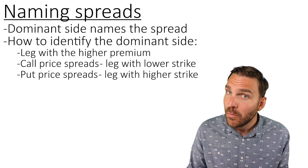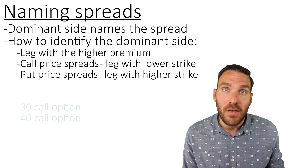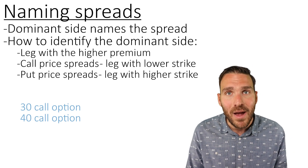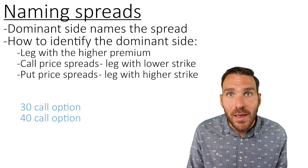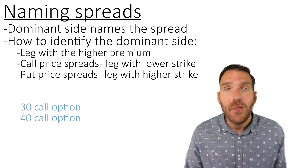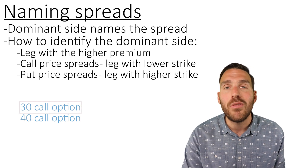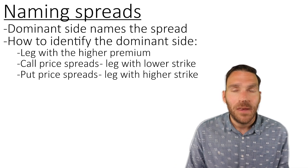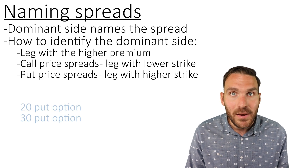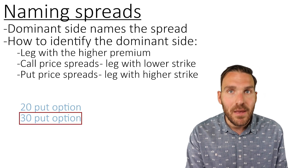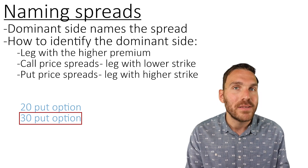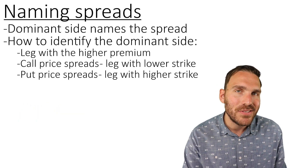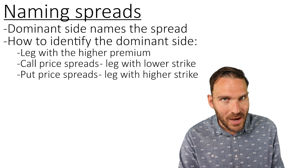When we say dominant side, we're often referring to the more valuable option. The lower the strike price on a call, the more valuable that call. For example, a 30 call gives the right to buy for 30, while a 40 call gives the right to buy for 40 — the 30 call is more valuable. Flipping it with puts: a 30 put is more valuable than a 20 put because it gives the right to sell at a higher price. With call spreads, the lower strike is dominant; with put spreads, the higher strike is dominant.